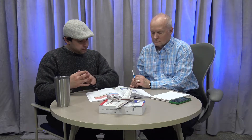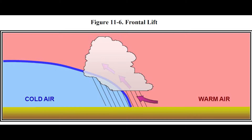Figure 11-6 revisits cold frontal lifting from last time, showing how that leads to more vertical cloud development — and explains why some areas get more rain than others.